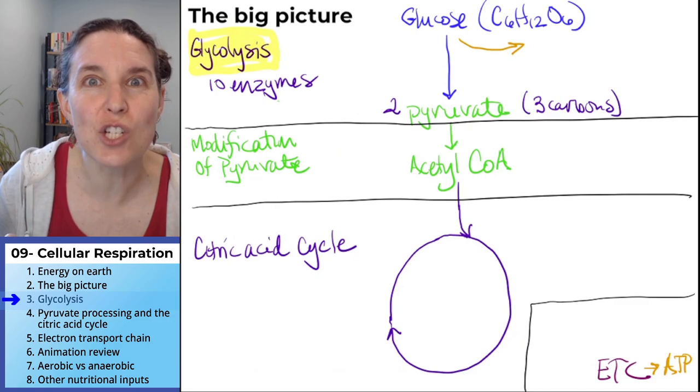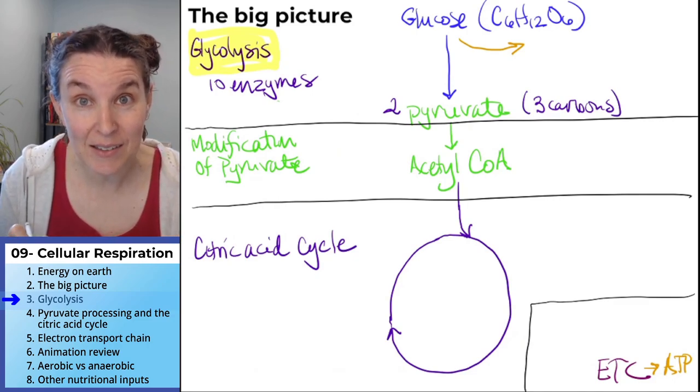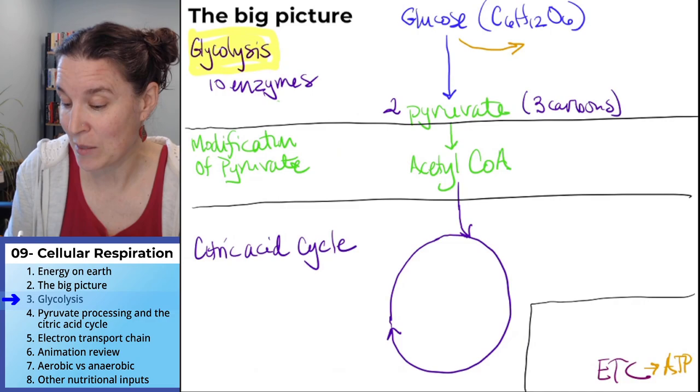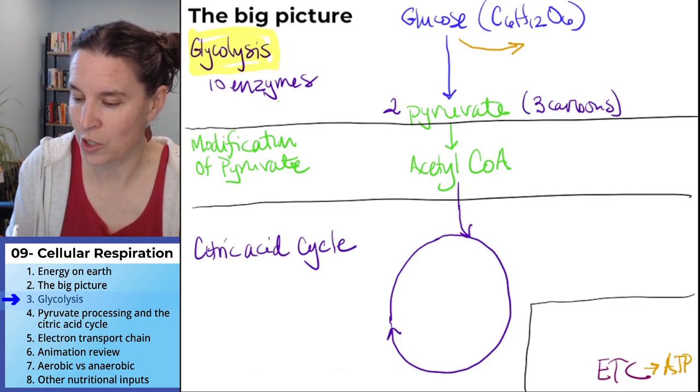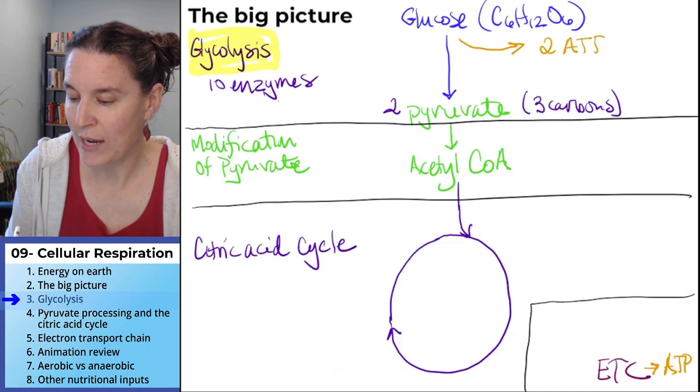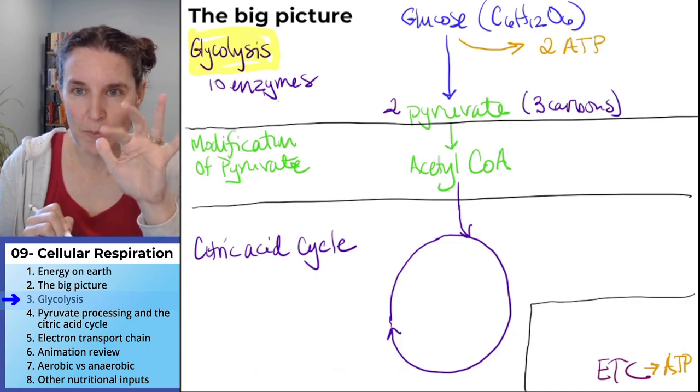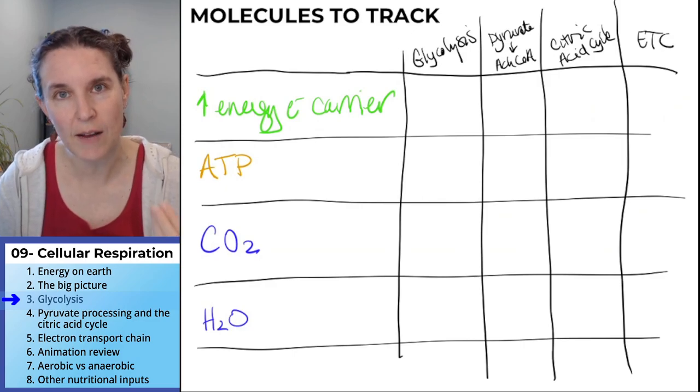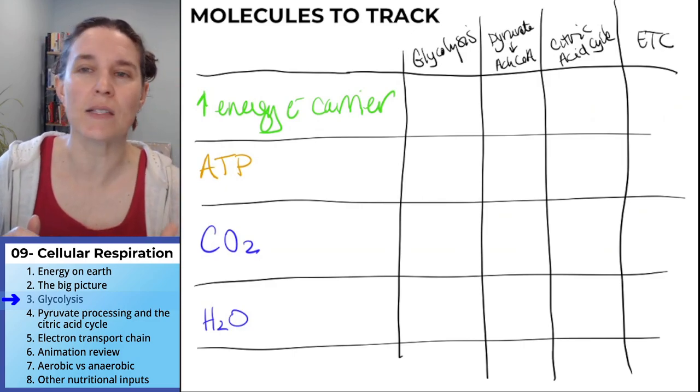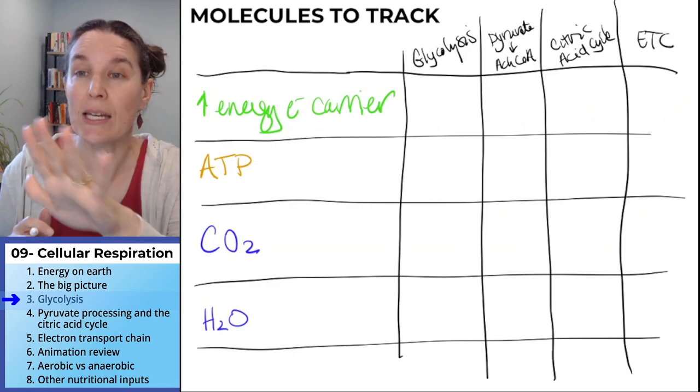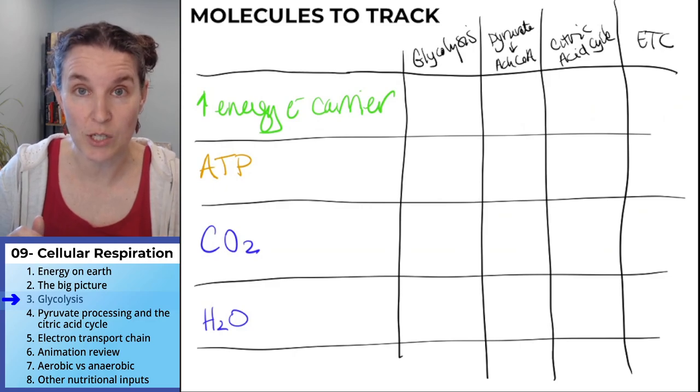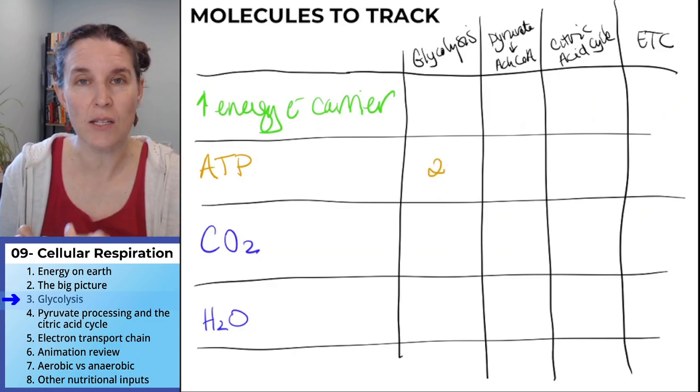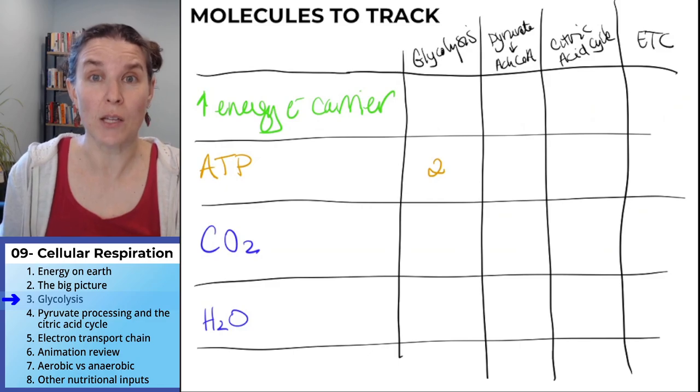We do get ATP. Some of the energy in the glucose molecules is captured and stored in ATP. Oops, I want to use orange. And it actually is two ATP molecules. I'm pushing brain pause to show you this chart that I've created. This is one place where you can summarize all the stuff you've got to keep track of in all four of the stages of cellular respiration that we're looking at. And now we know that we can actually fill in under the glycolysis column that we get two ATP molecules out of this process.